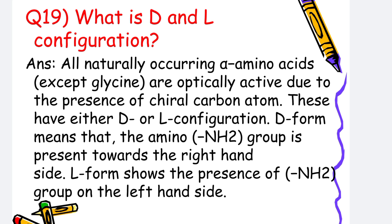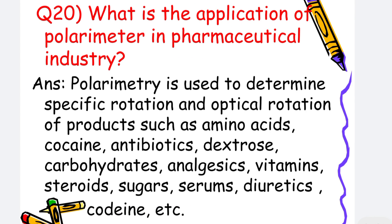D form means that the amino group is present towards the right-hand side, and L form shows the presence of the amino group on the left-hand side. What is the application of a polarimeter in the pharmaceutical industry? Polarimetry is used to determine the specific rotation and optical rotation of products such as amino acids, cocaine, antibiotics, dextrose, carbohydrates, analgesic vitamins, steroids, sugar, serums, diuretics, codeine, etc.